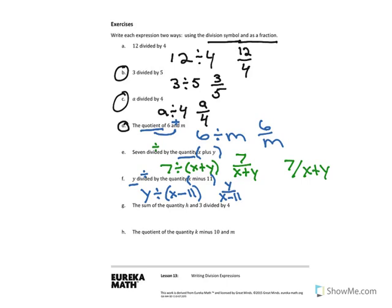Try exercise G: the sum of the quantity h plus 3, divided by 4. The word sum tells us we're adding, and because we have quantity we're going to write our parentheses — our grouping symbols — around h plus 3. You should have written h plus 3 in parentheses, then divided by 4. As a fraction, we write h plus 3 over 4.